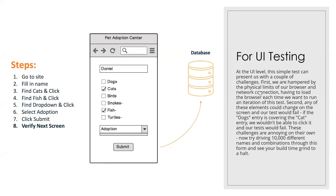Let's understand the difference between UI testing and API testing in more detail. Consider a website called Pact Adoption Center, where you choose what you want to adopt — cats, fish — and a service like Adoption. You click Submit, it goes to the database, business logic processes it, and the result is displayed. But at the UI level, this simple test can present challenges: you are limited by browser constraints and network connection, and the browser must be loaded each time.